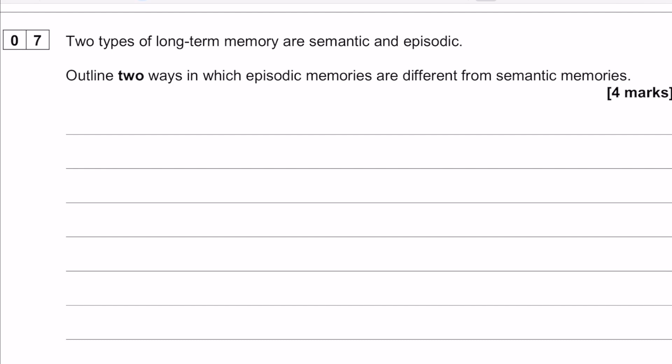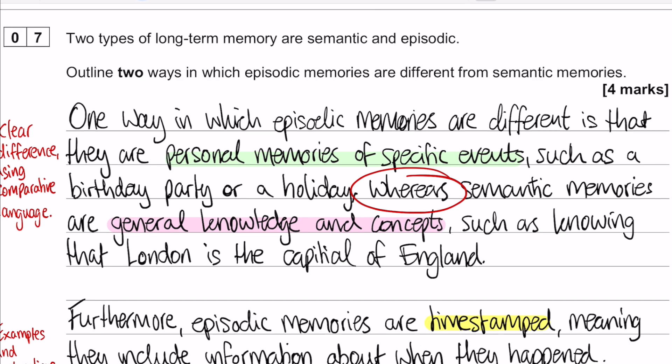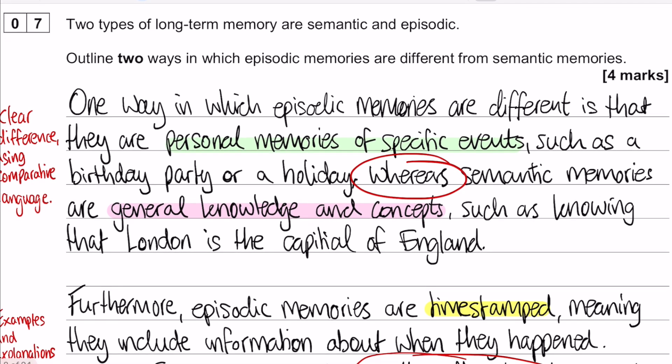Let's have a look at possible answers. A clear difference using comparative language is very important here. The mark scheme and the examiners look for language that is comparative — that means using things like 'whereas' or 'on the other hand,' just to really hammer home that you are comparing two different things.